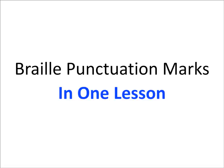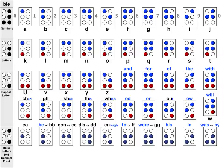This is Braille punctuation marks in one lesson. Most of the standard Braille punctuation marks are found along the bottom row of cells that fit the A through J pattern. And here they are.